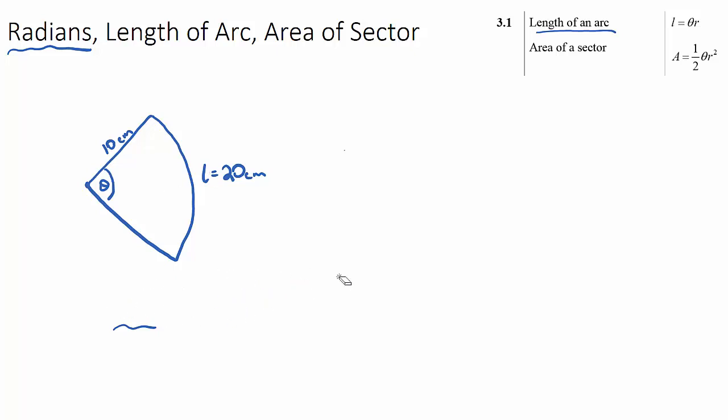Now, in the IB maths questions, you're going to get a lot of sectors, and you might actually be given θ. So let's just say this is now 1.8 radians.